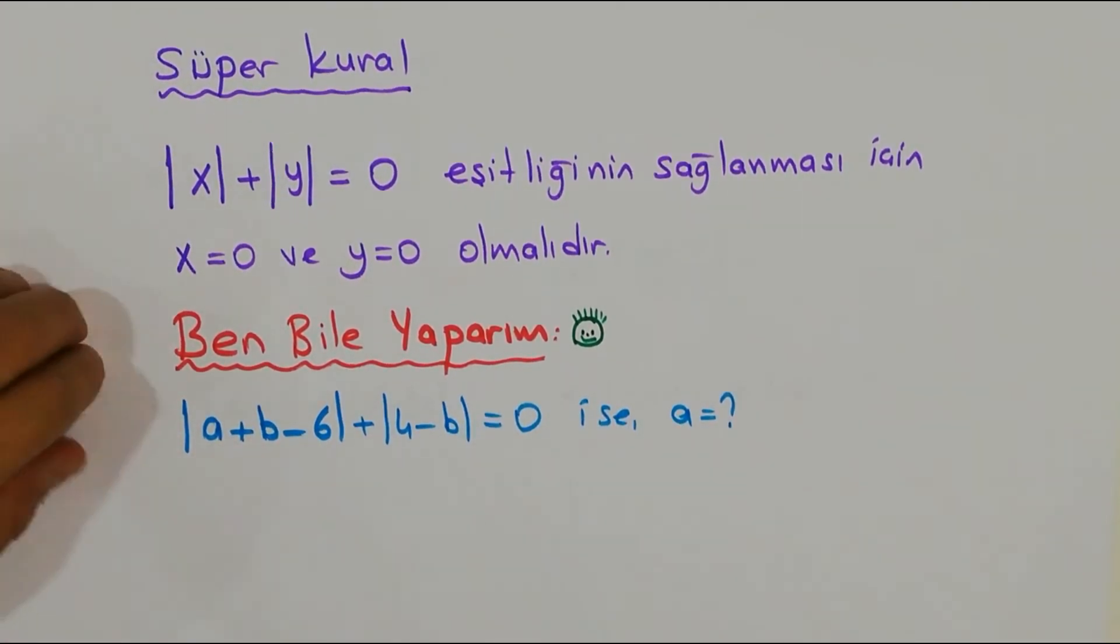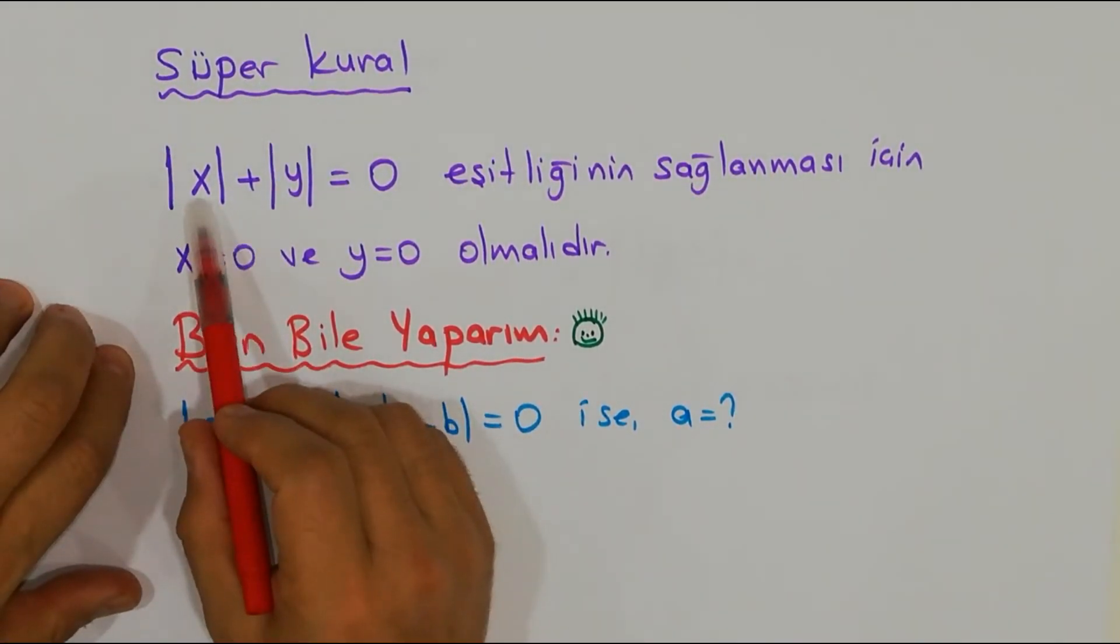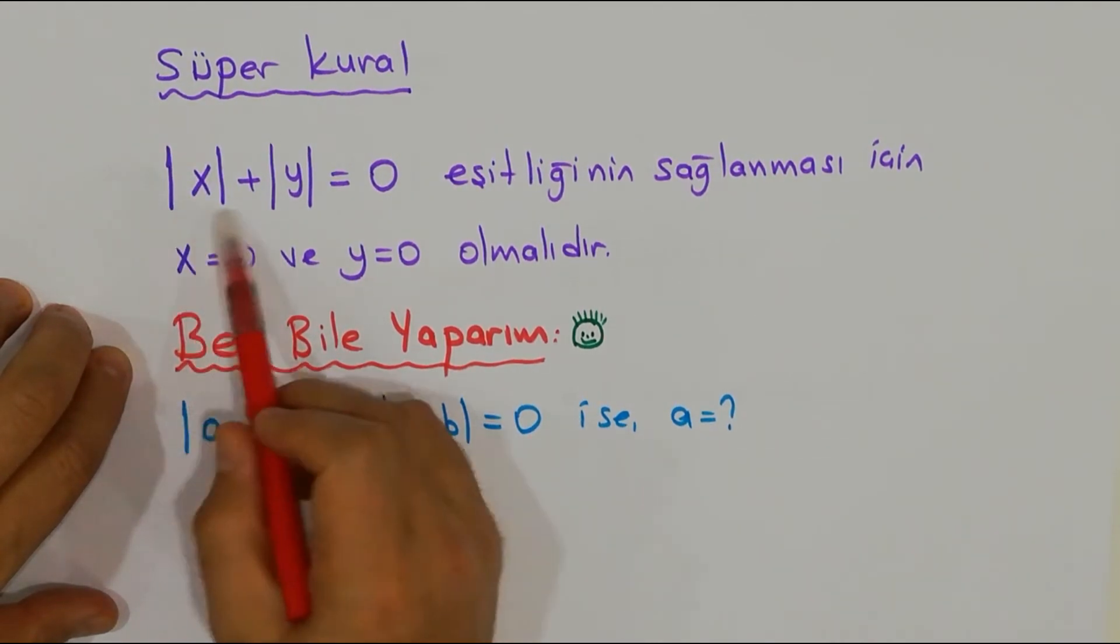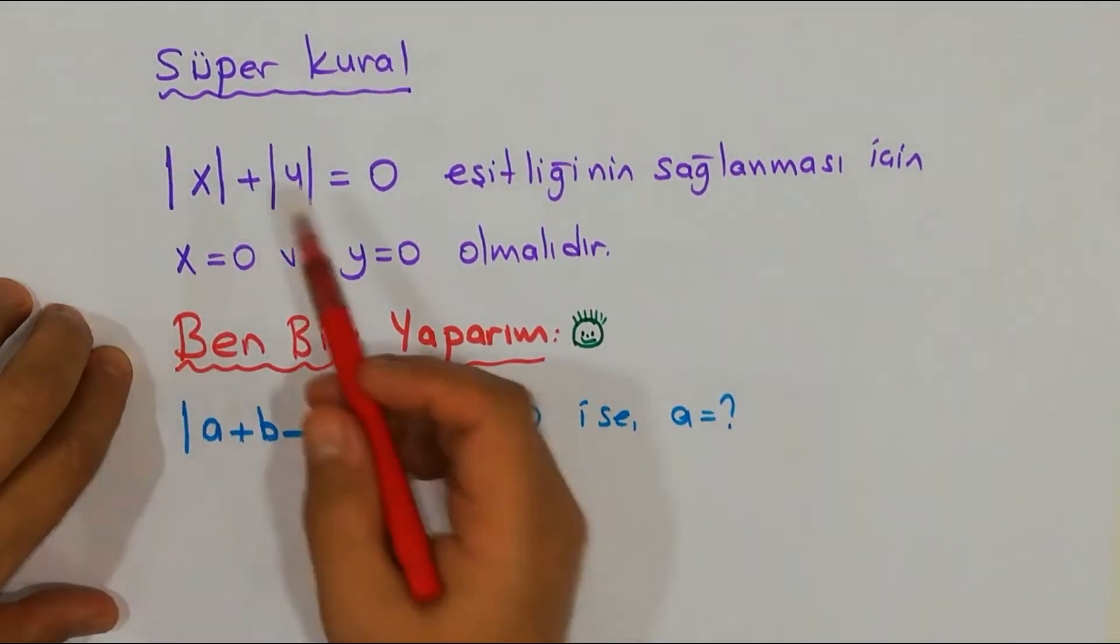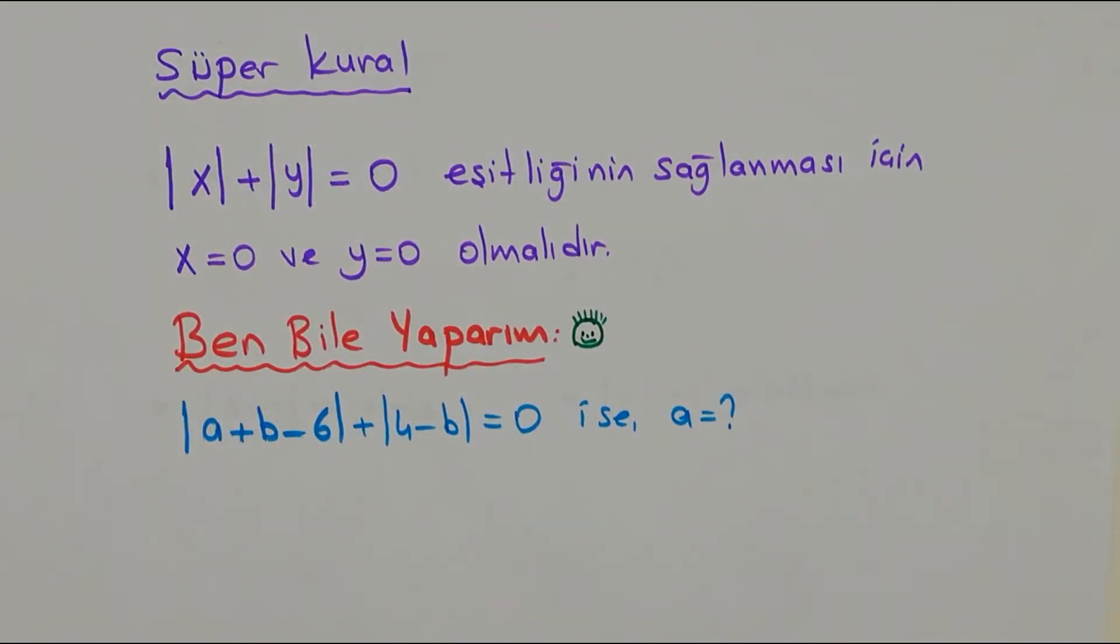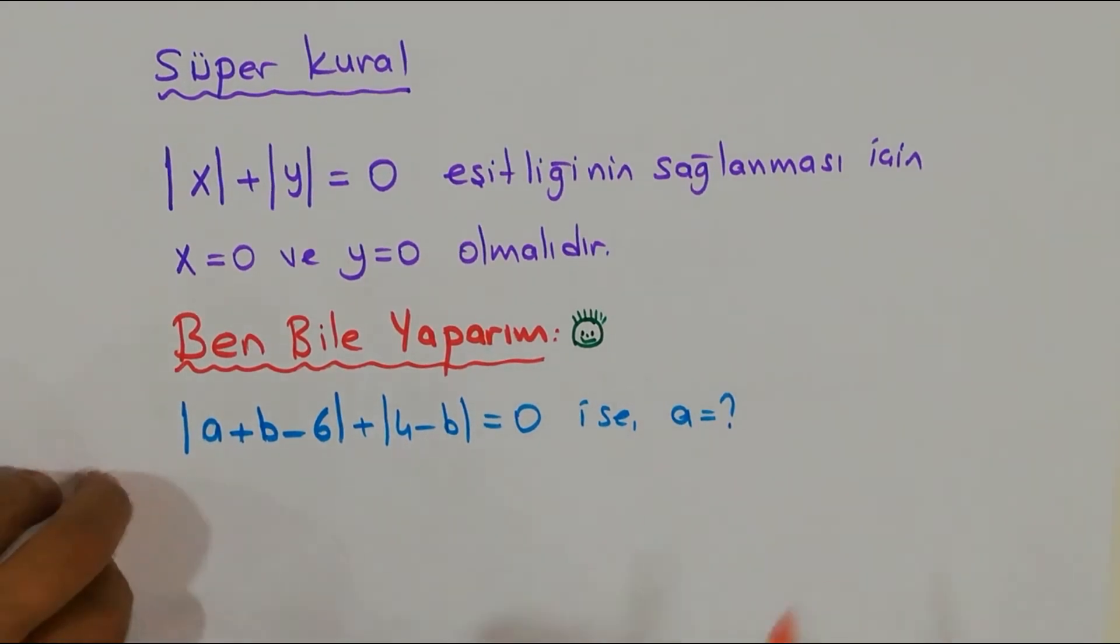Çünkü neden? Eğer bu pozitif olsa ya da negatif olsa pozitif çıkar, pozitif bir sayı, hani sıfır olmasa. Bu da pozitif olsa, iki pozitif toplamı asla sana sıfır vermeyecektir. O yüzden ne diyoruz? Kesinlikle işleri sıfır. Ben bile yaparım arkadaşlar bu soruyu. Siz dedim ya daha önce zaten yaparsınız, yani ben şu anda bu soruyu çok rahat yaparım, siz zaten yaparsınız.